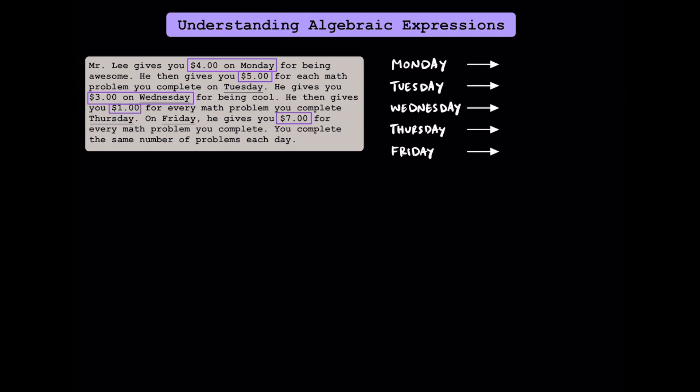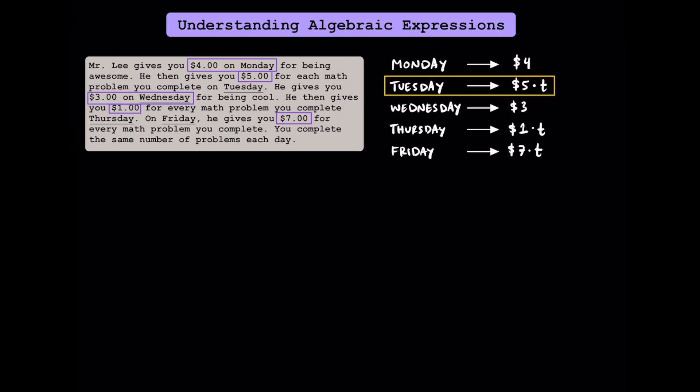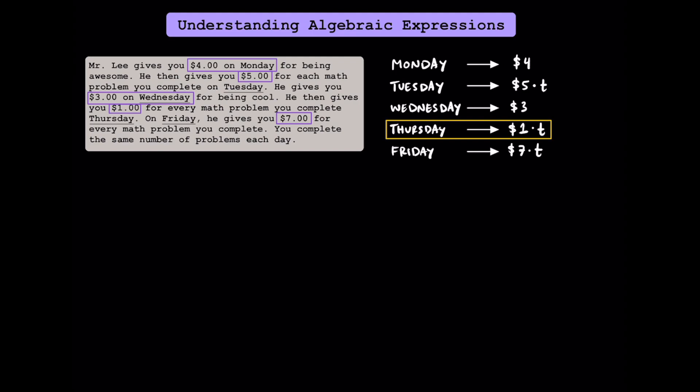Let's start by organizing the information a bit. On Monday, you just get the $4 one time for being awesome. On Tuesday, the amount of money you make really depends on how many math problems you do. While you make $5 per problem, the more problems you do, the more money you'll make. We can represent this total amount of money by writing $5 times the number of problems that you do. On Wednesday, you just get $3 for being cool — you don't have to do any math problems. On Thursday, you're getting $1 per problem, so it's very similar to Tuesday, except you get less money per problem. And on Friday, Mr. Li is feeling generous, so you're actually getting $7 for every math problem that you do. If I were you, I would try to do as many problems as I could on Friday to make more money.